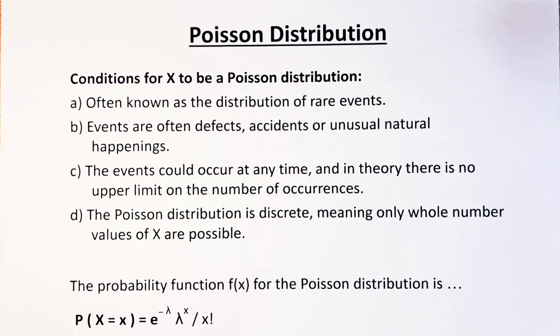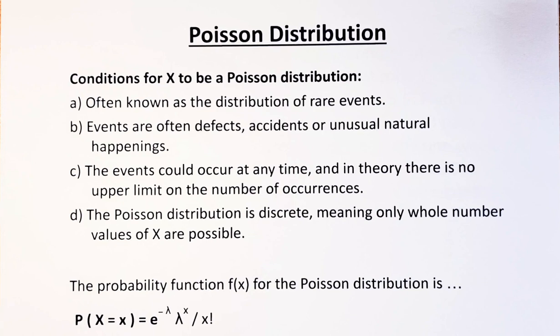The event could occur at any time, and in theory, there is no upper limit on the number of occurrences. The Poisson distribution is discrete, meaning that the probability can only take discrete, whole number values of x.